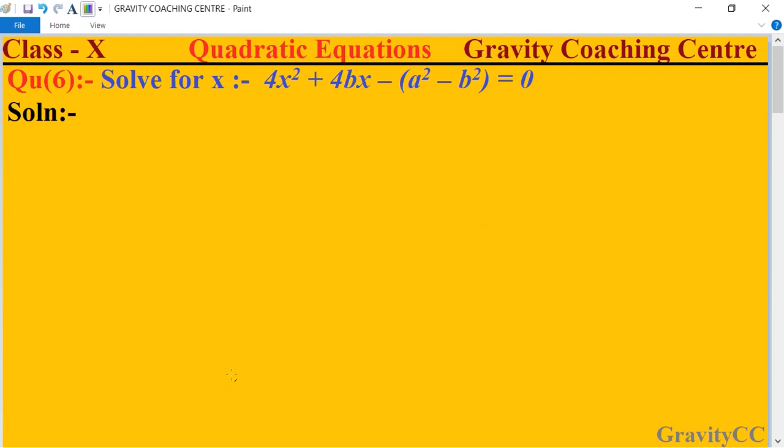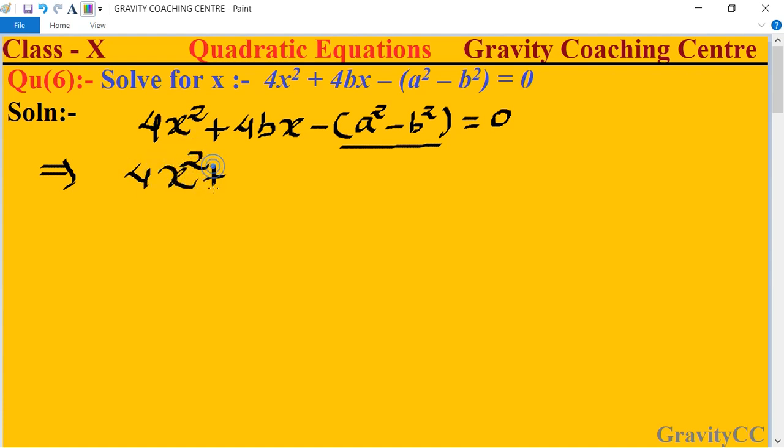For the given quadratic equation, first of all we open the bracket, so 4x² plus 4bx.